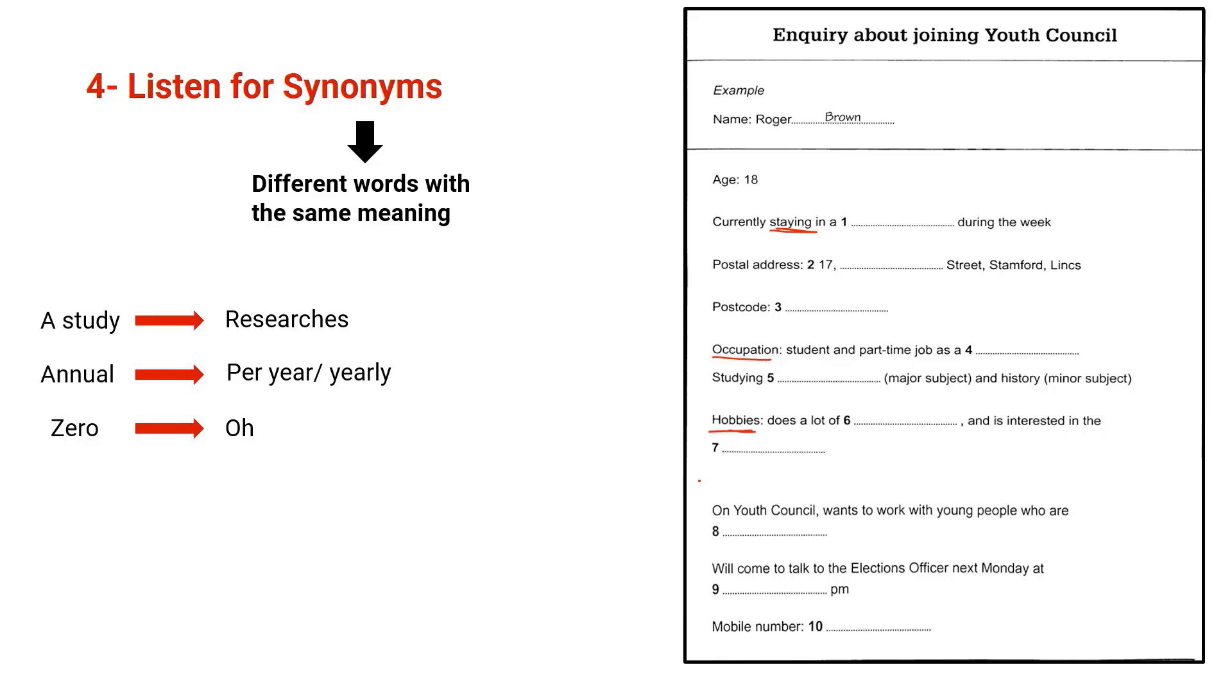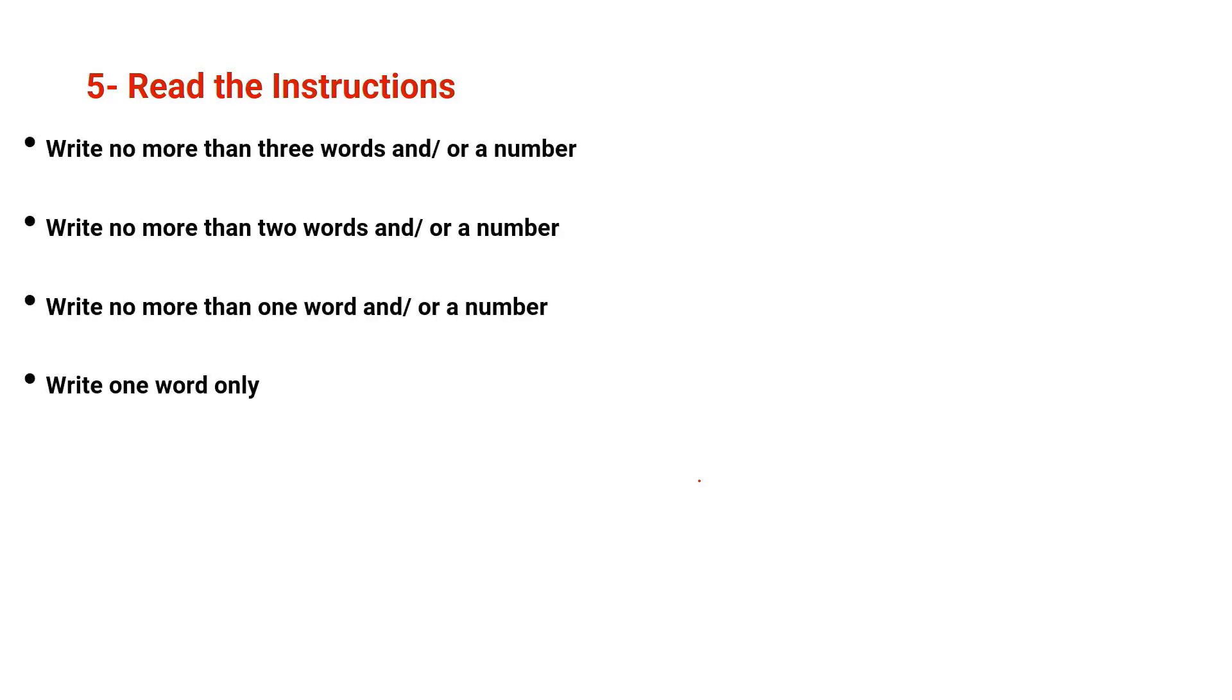Now let's move to the fifth strategy, which is reading the instructions. This is highly significant to know, especially when it comes to this question. It's a sentence completion question. And the instructions tell you to write, for example, no more than three words and/or a number, no more than two words and/or a number, no more than one word and/or a number, or write one word only. And I have a video on this question. I'll leave you the link in the description box to understand all the options you will have from these instructions.